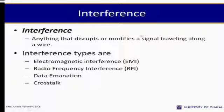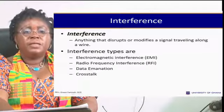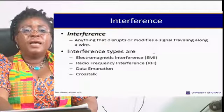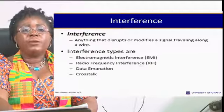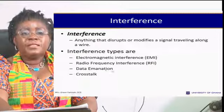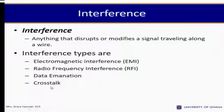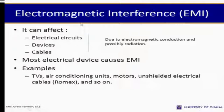Any disturbance that disrupts or modifies a signal traveling along a wire is termed interference. Interference types include electromagnetic interference (EMI), radio frequency interference (RFI), data emanation, and crosstalk. Electromagnetic interference affects electrical circuits, devices, and cables. Most electrical devices cause EMI — examples include TVs, air conditioning units, motors, and unshielded electrical cables.